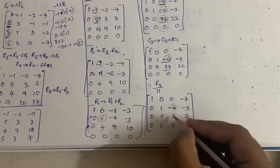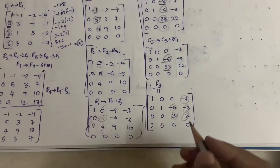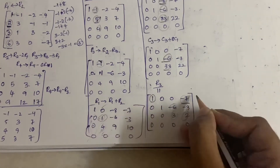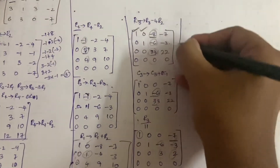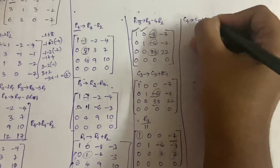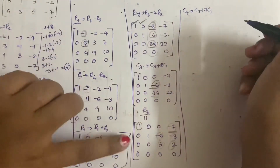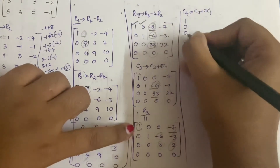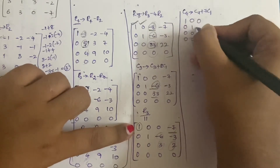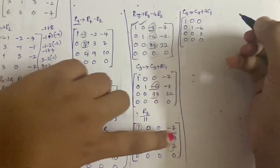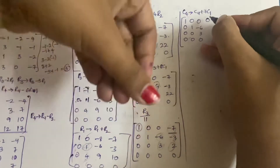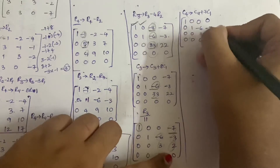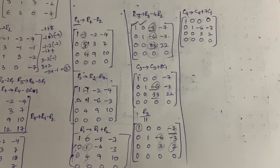Now our target is to make minus 7 zero, minus 6 zero, and get the pivot as 1 in column 3. To make minus 7 zero: minus 7 plus 7 = 0, so we use C4 becomes C4 plus 7·C1. The first three columns stay the same. In C4: minus 7 plus 7 = 0; minus 3 plus 0 = minus 3; 2 plus 0 = 2; and 0 stays.